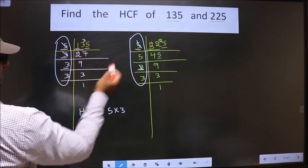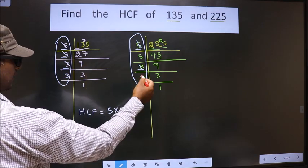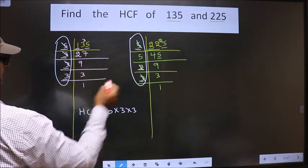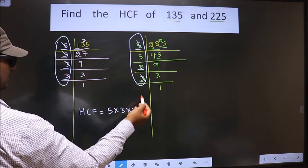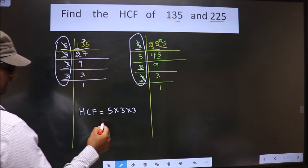Next number is 3. Do we have any more 3? No. So, here the numbers are done.